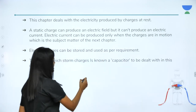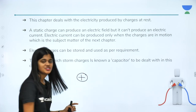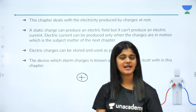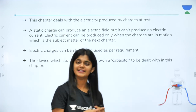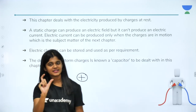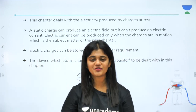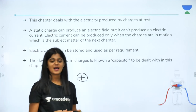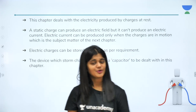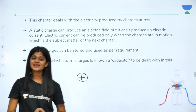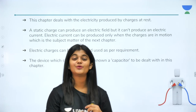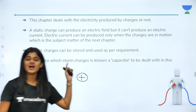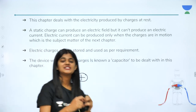So if I have a positive charge here, this positive charge is capable of creating an electric field around it — similar to a magnetic field. Similarly, if I have any electric charge, it can produce an electric field, but a static charge cannot produce electric current. Electric current can be produced only by charges in motion.